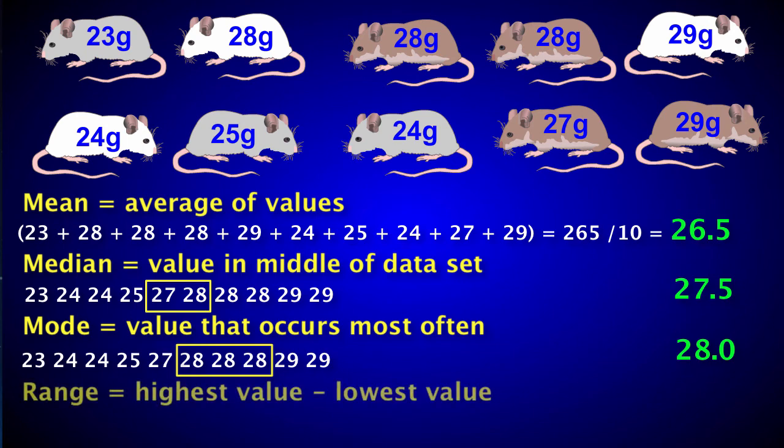The range is just the difference between the largest and smallest values. So 29 minus 23 is 6.